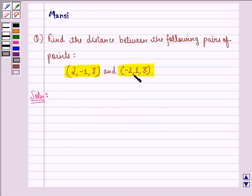So let us find the distance between these two points. Let us let the point P be 2, minus 1, 3 and the point Q be minus 2, 1, 3.